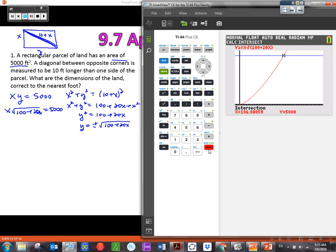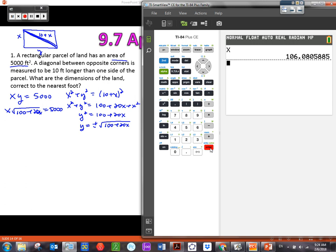So there's our intersection: 106.08059, and then our y value is 5000. This is the dimension of that portion, the x portion of my rectangle. They do want me to round to the nearest foot, so I am going to round this, but I don't want to round it until after I finish using it. This value is stored in x. That's why we never, ever, ever store in x because that's the calculator's storage place. We don't want to put something in there because the calculator is just going to erase it whenever it wants to.